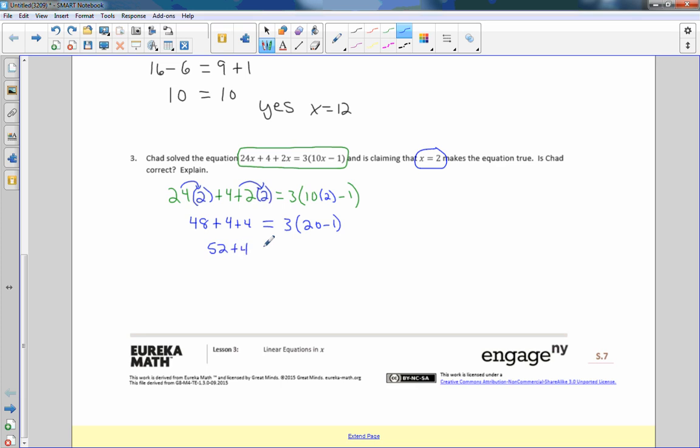Plus 4 equals. Now, I'm on the other side of an equal sign. PEMDAS applies to this side. It would be 3 times what's in the parentheses, which is 20 minus 1. 52 plus 4 is 56. And 9 times 3 is 27. Carry the 2. 3 times 1 is 3. Plus 2 is 5. 56 does not equal 57. Therefore, x does not equal 2.